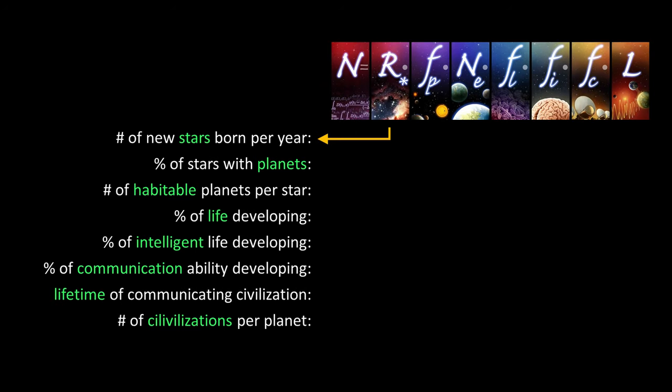The Drake equation combines seven parameters — I've added an eighth one here. I'm not using the symbols in the equation because it's too easy for people to forget what each one stands for. The variables build on each other, hence the multiplication.